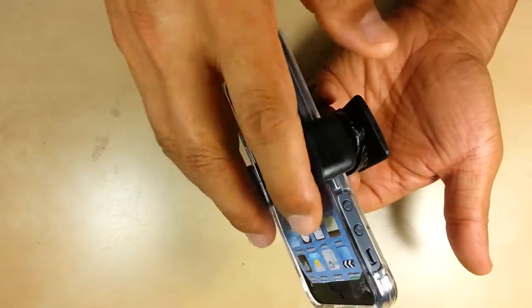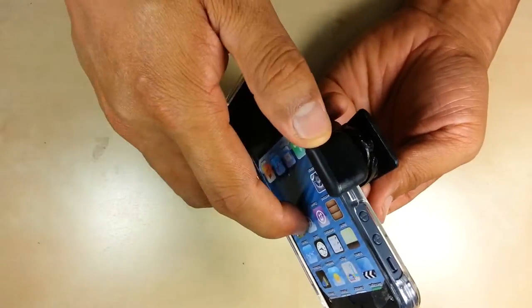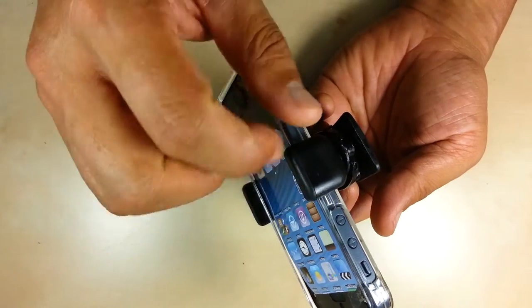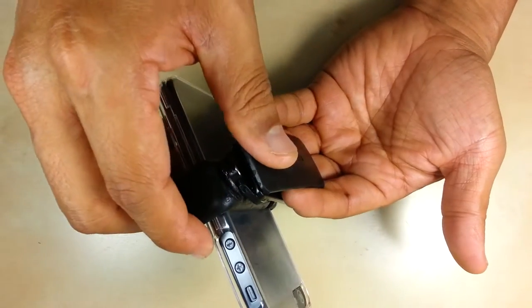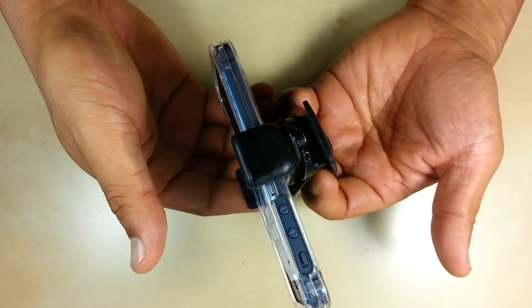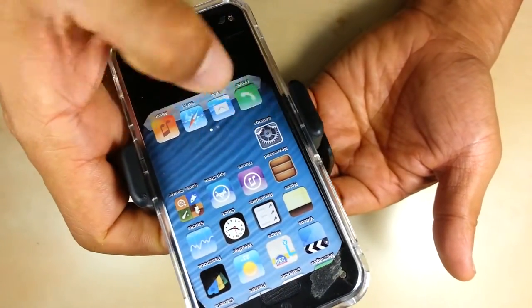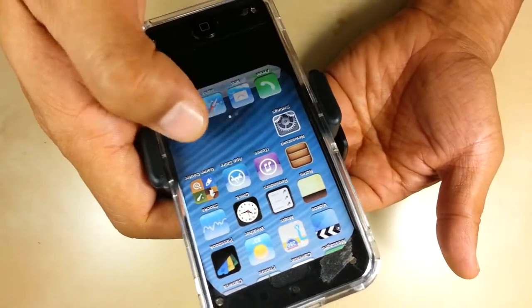There is no need to take out the phone from the holster to check the screen. Simply, while you're wearing it and putting it on your belt, you can lift the bottom and you can have fast access to maneuvering the screen.